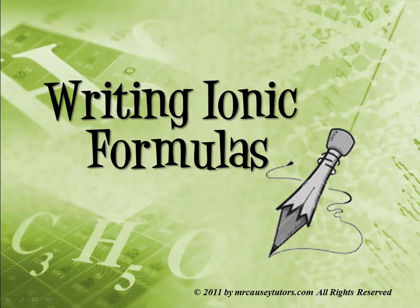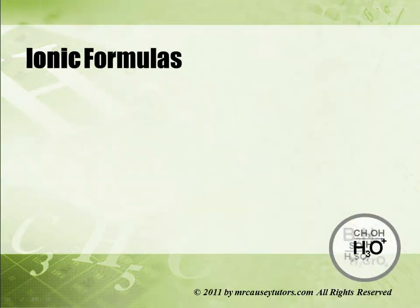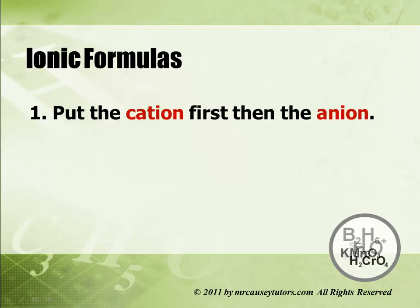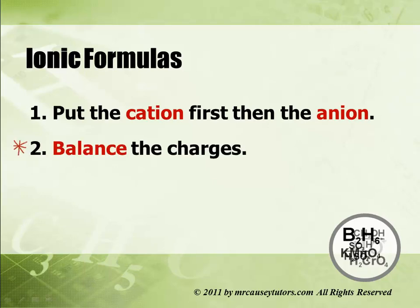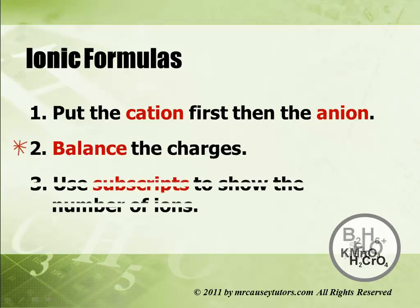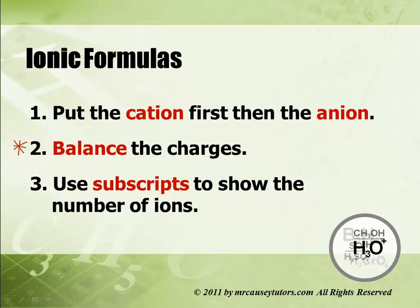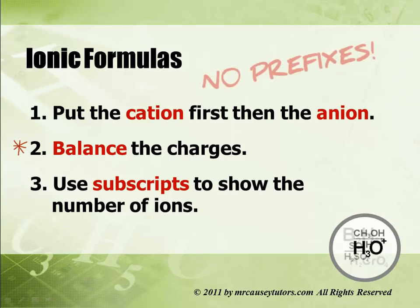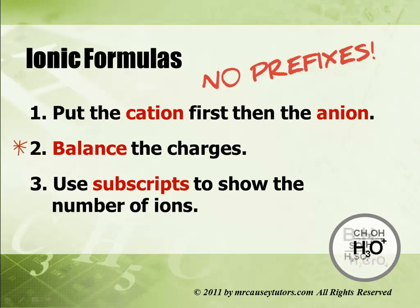Writing ionic formulas — make sure you get these rules down. One: put the cation first and then the anion. Two: balance the charges. Very important. And three: use subscripts to show the number of ions. One big mistake people make with ionic formulas is that they use prefixes. Do not use prefixes with ionic compounds. We use prefixes only with covalent compounds.